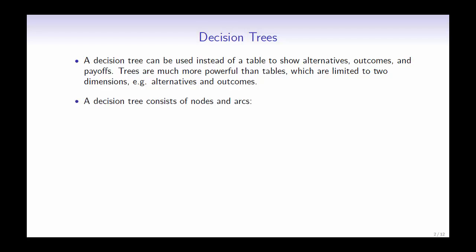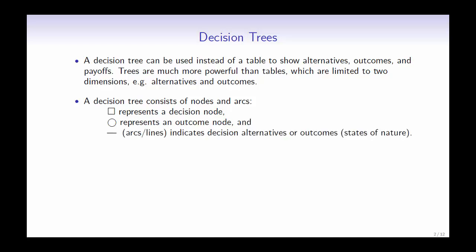It consists of nodes and arcs. A square represents a decision node, a circle represents an outcome node, and a line indicates the decision alternatives or outcomes. A decision tree shows the order of decisions and outcomes.